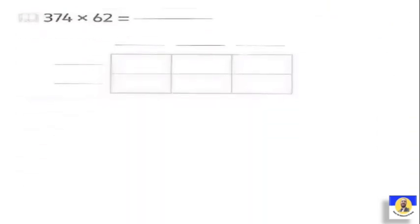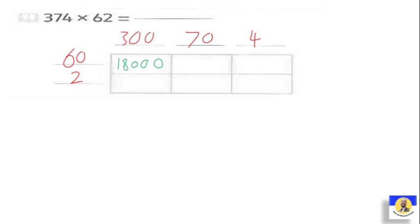The next question: three hundred seventy-four by sixty-two. We write the values: three hundred, seventy, and four across the top; sixty and two on the side. Three hundred by sixty: put three zeros, and three by six equals eighteen. Again, sixty by seventy: put two zeros, and six by seven equals forty-two. Sixty by four: put zero, and six by four equals twenty-four. After that, two by three hundred: put two zeros, two by three equals six. Two by seventy: put zero, and two by seven equals fourteen. And two by four equals eight.